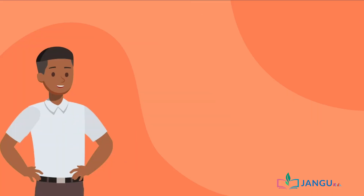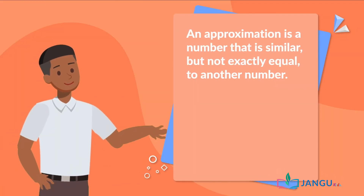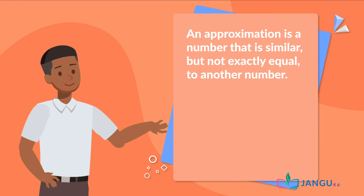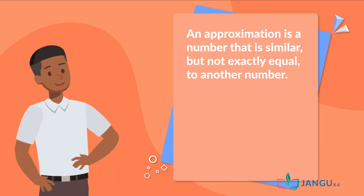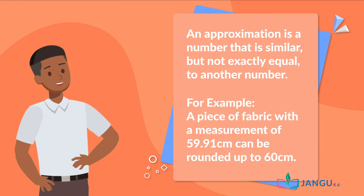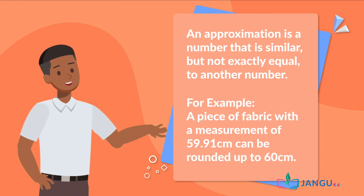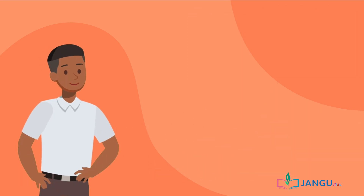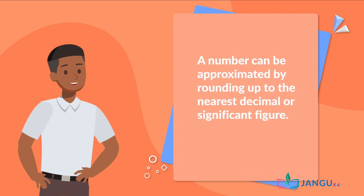In mathematics, an approximation is a number that is similar but not exactly equal to another number. For example, a piece of fabric with a measurement of 59.91 centimeters can be rounded up to 60 centimeters. It is not exactly equal, but it's good enough to be used as the length of the fabric.